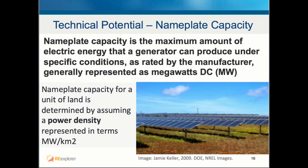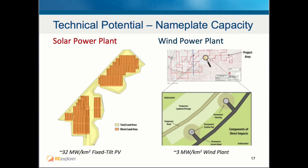With the available land area, we calculate the nameplate capacity. Nameplate capacity is the maximum amount of electric energy that a generator can produce under specific conditions as rated by the manufacturer, generally represented in megawatts direct current. It is calculated by taking the power density times the available land area. For fixed-tilt photovoltaics, we generally use 32 megawatts per square kilometer. Wind, on the other hand, is less dense at around 3 megawatts per square kilometer, because you aren't able to pack turbines closely together for risk of reducing wind potential. These numbers are subject to change as technology advances.